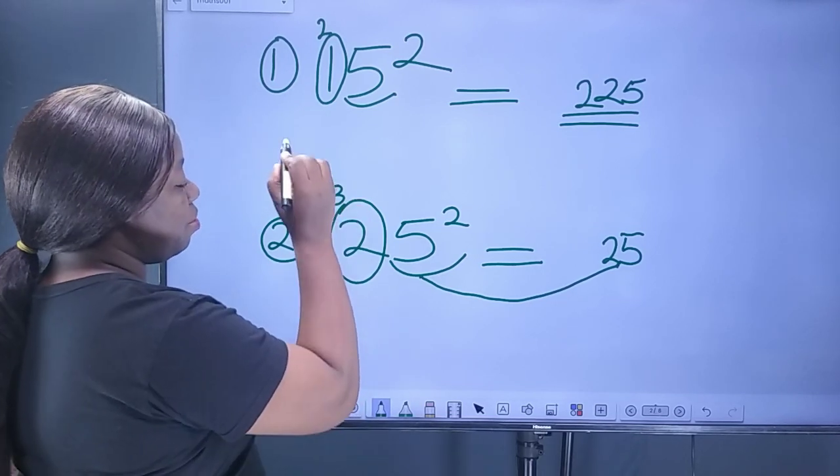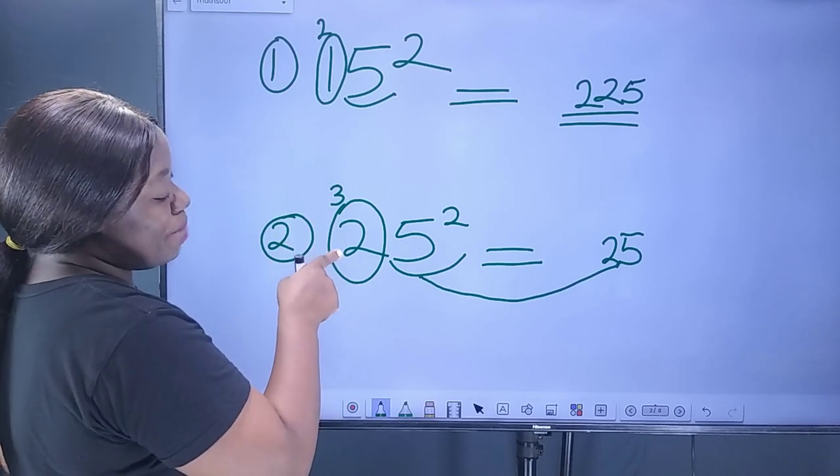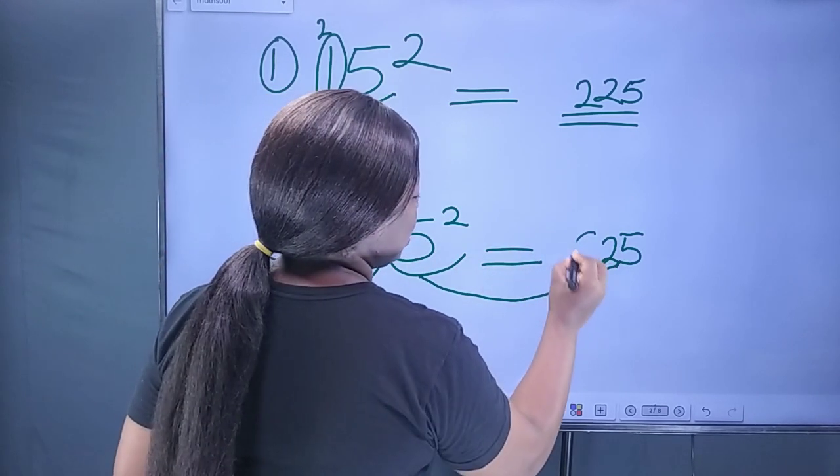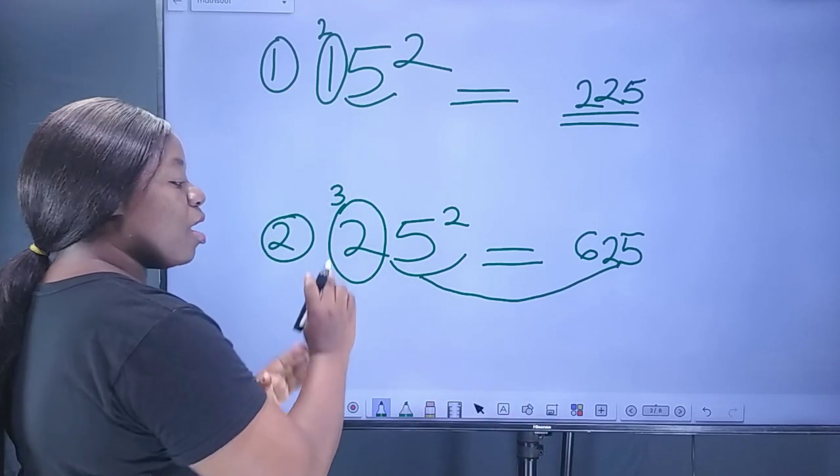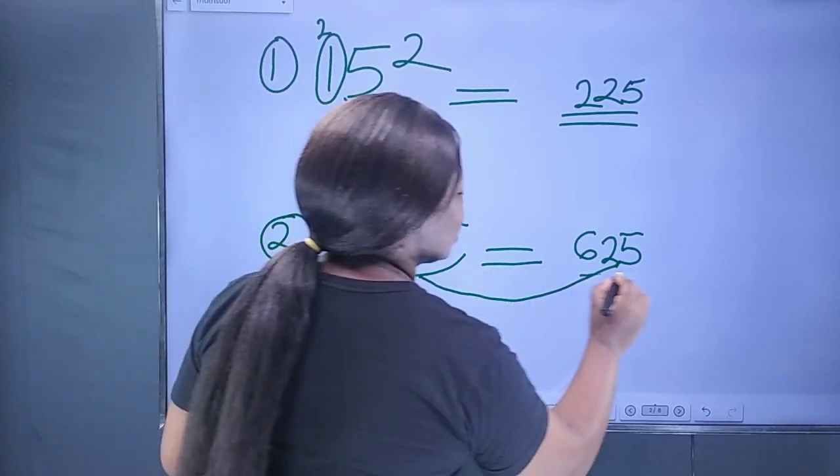So, 3 will be written down and multiplied by 2. So, 2 times 3 is 6 which means the square of 25 is 625.